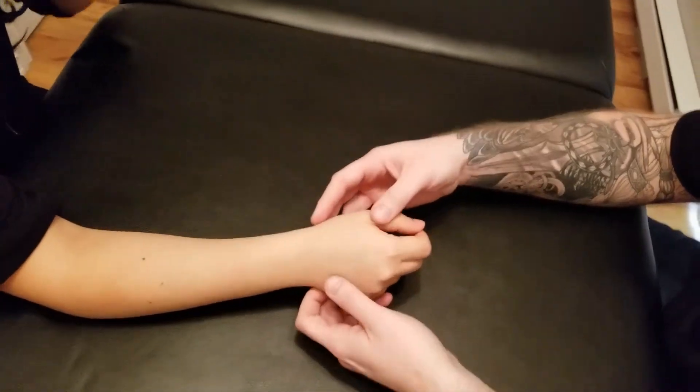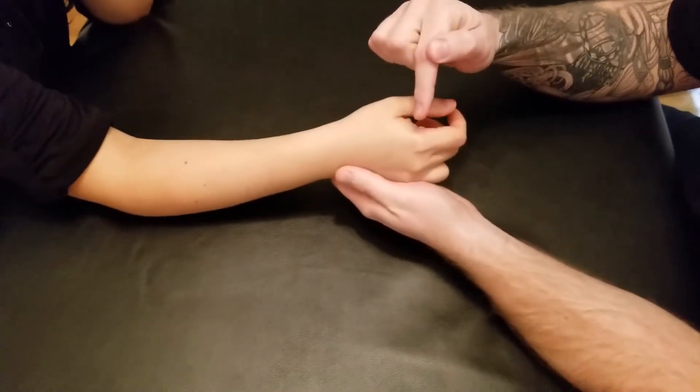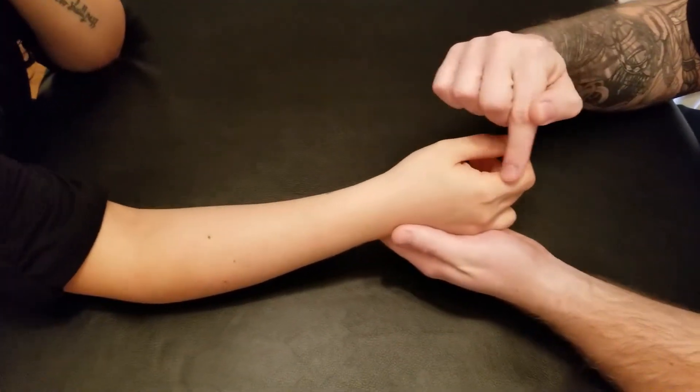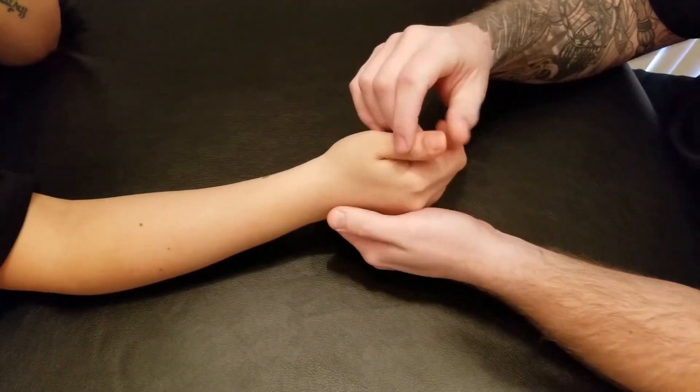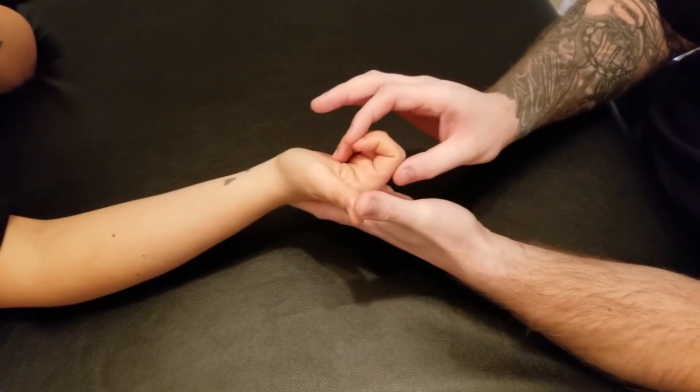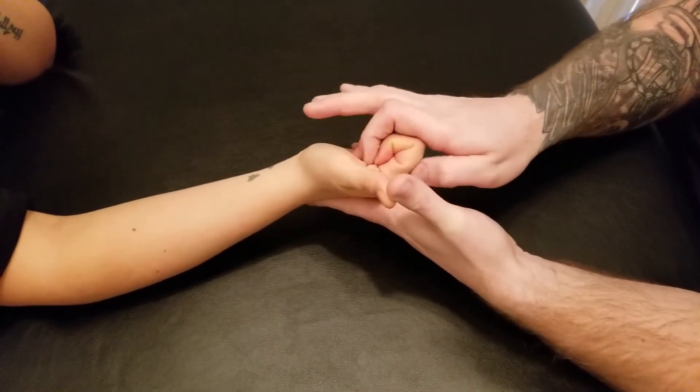Now, to lengthen extensor indicis, because of its extension happening at each of the joints in the finger, we're basically going to start by curling it up. So I'm going to passively curl it all the way up, like so.